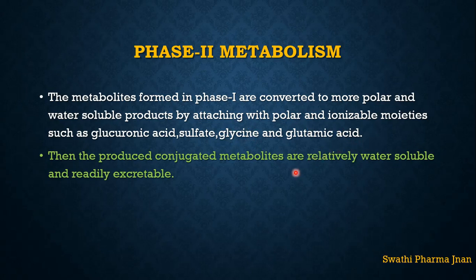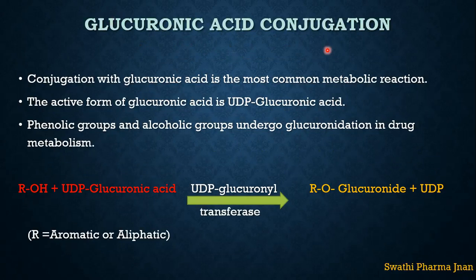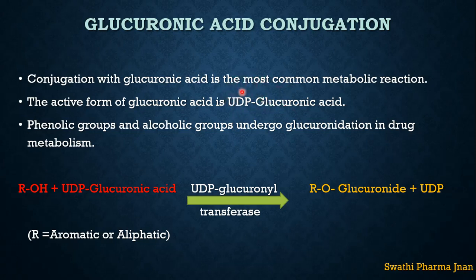Conjugation with glucuronic acid is the most common metabolic reaction out of all Phase 2 metabolism reactions. The active form of glucuronic acid is UDP-glucuronic acid. This is the form present in the human biological system, which will enter into the liver to undergo the conjugation reaction.